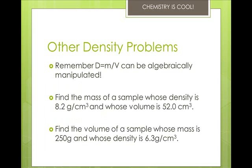Remember that density equals mass over volume and can be algebraically manipulated. Find the mass of a sample whose density is 8.2 grams per centimeter cubed and whose volume is 52.0 centimeters cubed. We write D equals M over V, then multiply by V over 1 on each side, and your result formula is mass equals volume times density. Our mass is 52.0 centimeters cubed times 8.2 grams per centimeters cubed. The centimeters cubed cross out, and you end up with 426 grams. Go ahead and try the next one on your own.